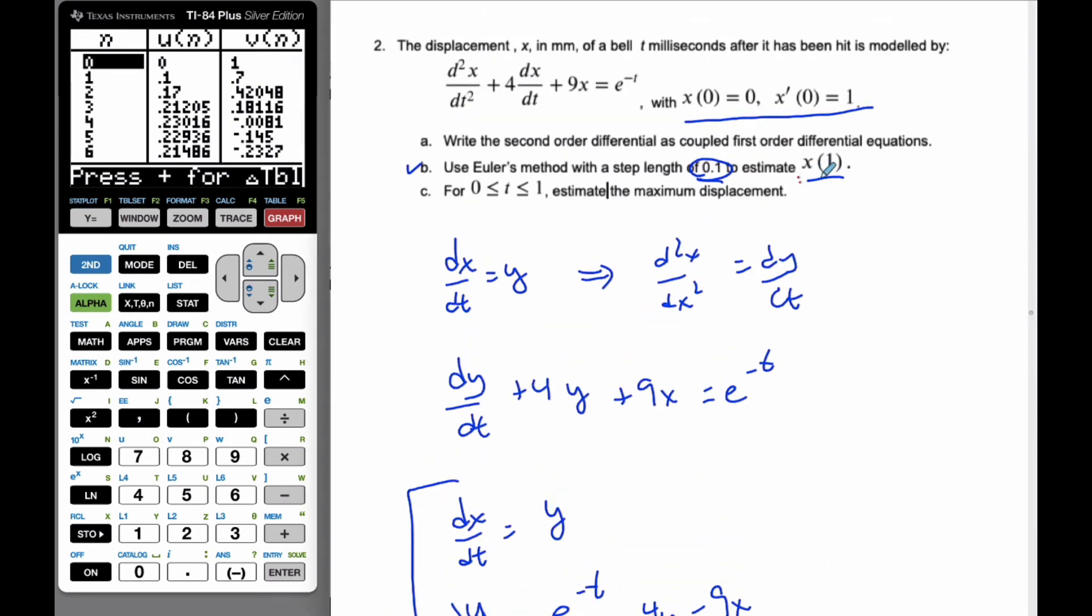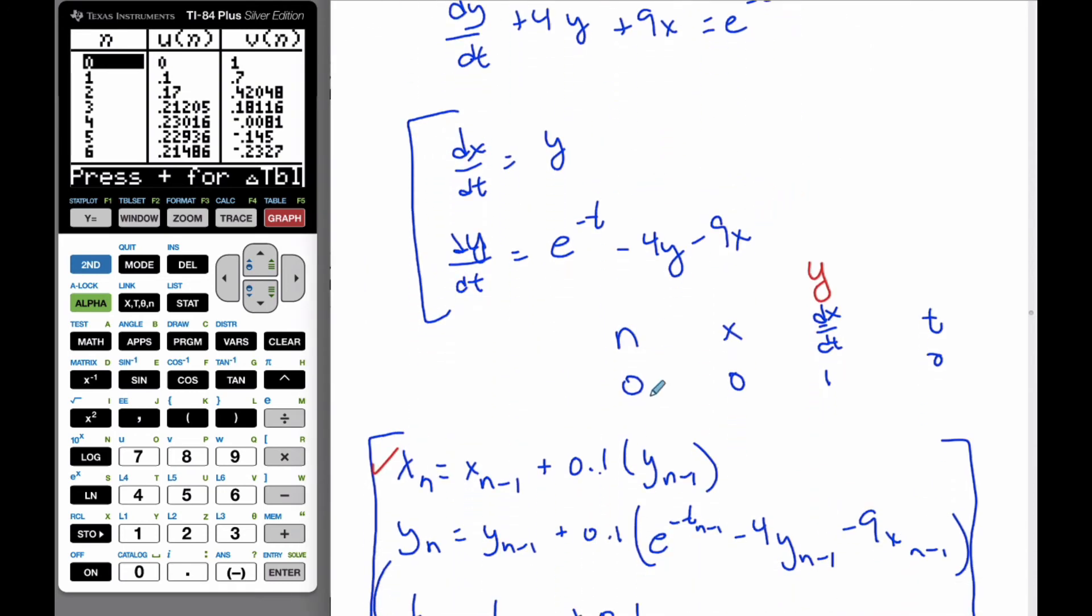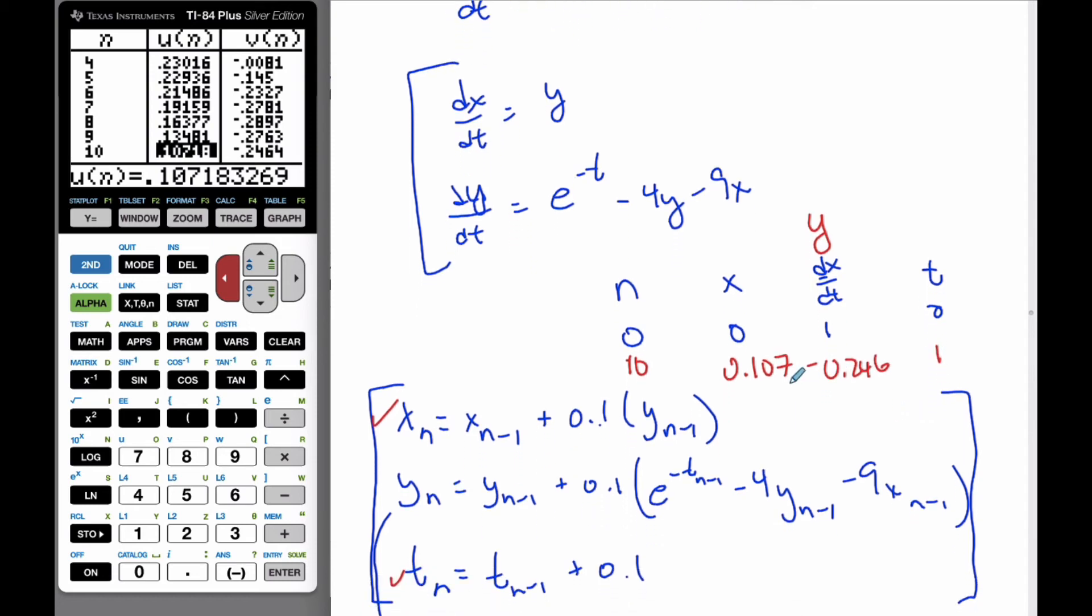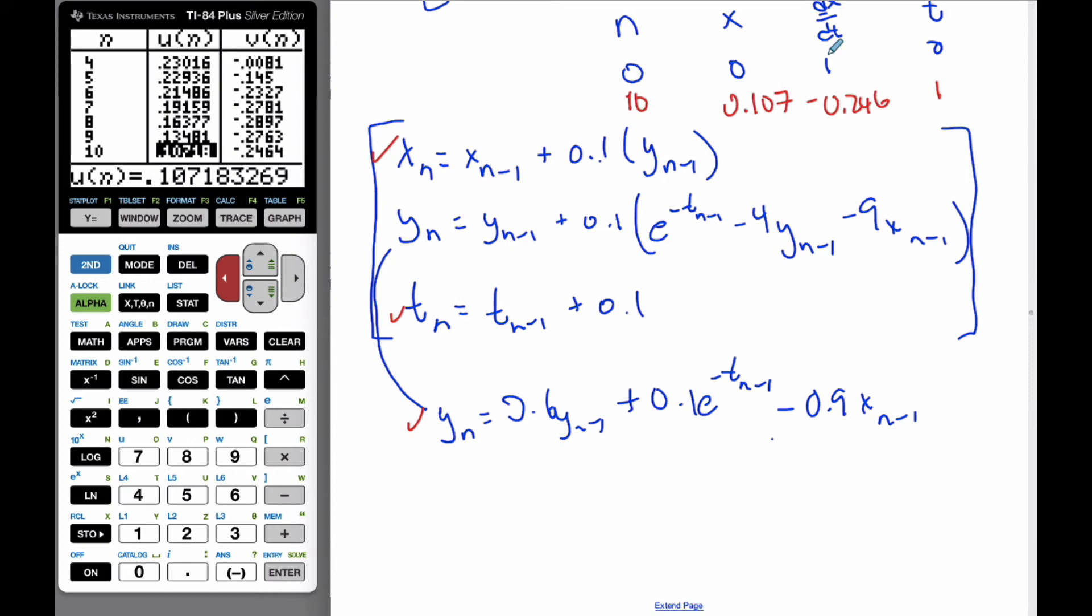And just to be clear, we are looking for when x at 1. That means I'm going to be doing n is 10, I believe. So we can check over here when n is 10. That means when n is 10, my x value is 0.107. My y value is negative 0.246. And this is 1. And so to answer the question, based upon Euler's formula, x at 1 is equal to 0.107. It's approximately that.